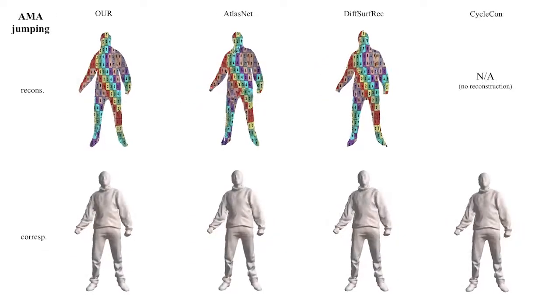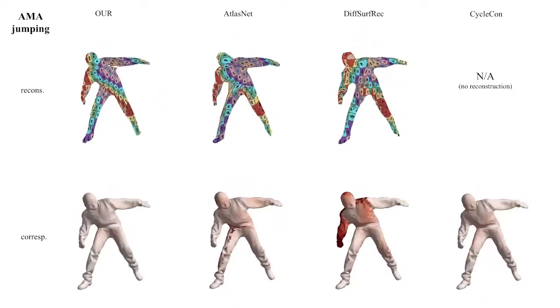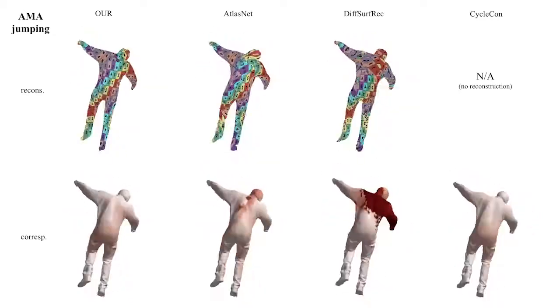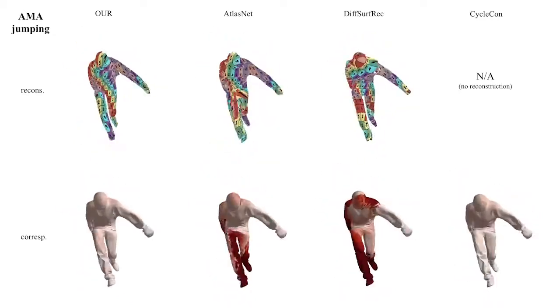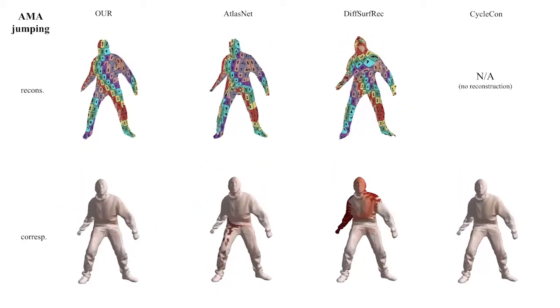In this very dynamic sequence, AtlasNet, DSR, and CycleCon all swap the legs of the human, while our method remains coherent.